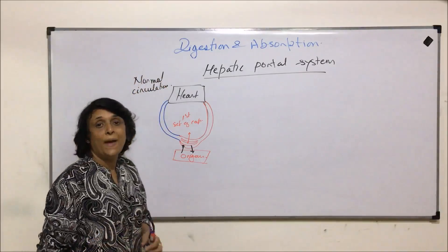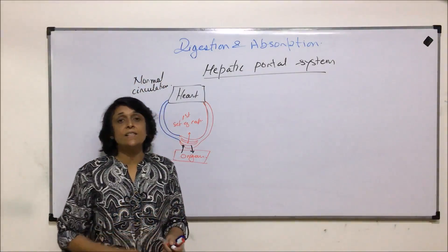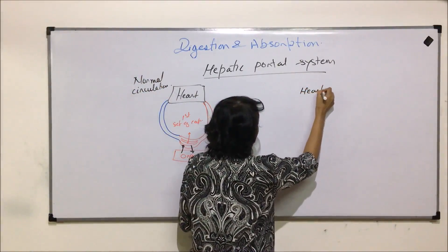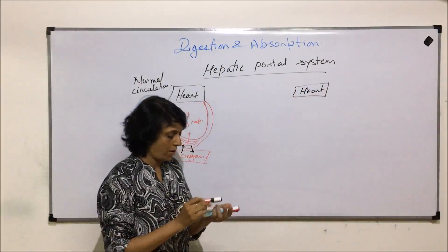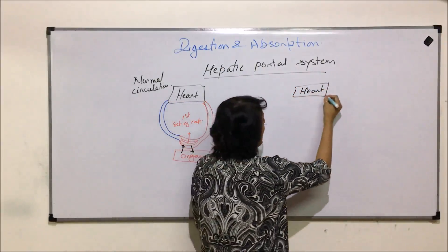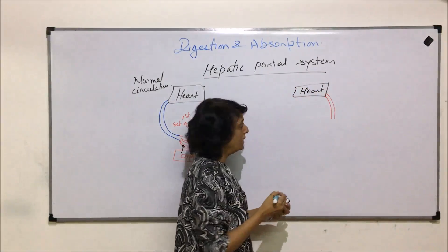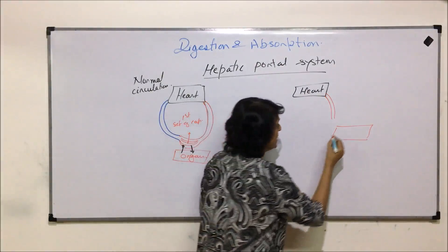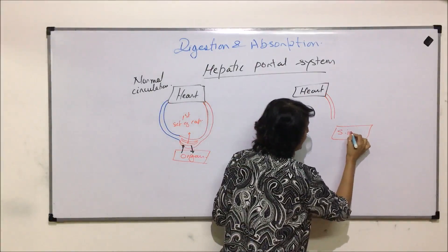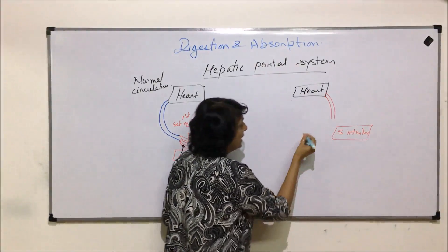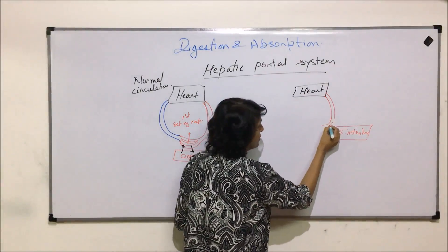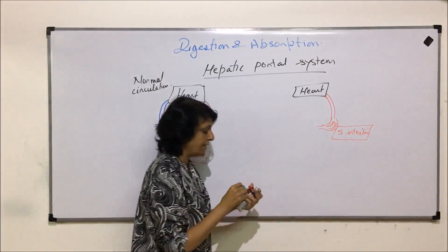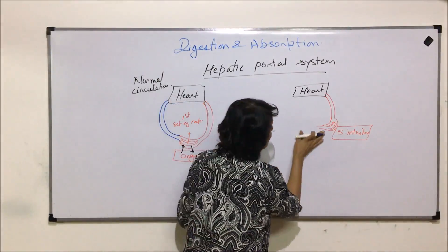In the hepatic portal system there is a slight change. The heart pumps blood into an organ — the same way, an artery carries blood — but now this organ is the small intestine. Here, the blood vessel divides into a set of capillaries, and these capillaries join to form a vein.